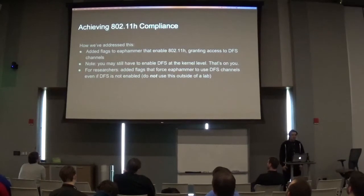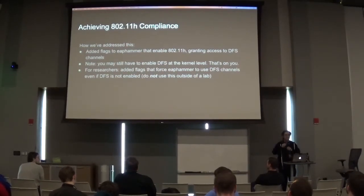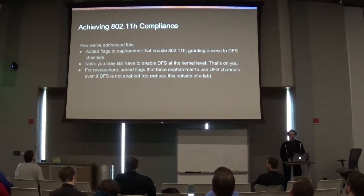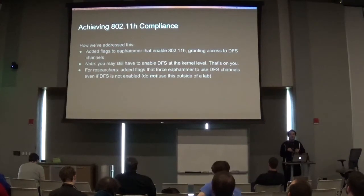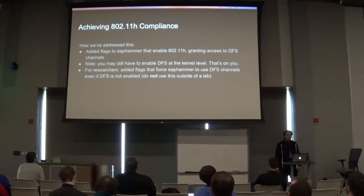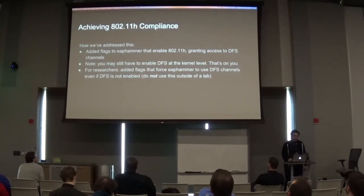We've added flags to ePammer — this tool — that enable 802.11h, which grants access to DFS channels. If you're using a standard version of Linux, you'll need to patch your kernel to enable DFS — that's on you, since we're not in the business of writing kernel patches. But if you have an OS patched to enable DFS with the relevant kernel modules, you can use ePammer to control them and enable access to DFS channels. There's also a flag — for research purposes and lab environments only, it's illegal to use outside a Faraday cage — that forces ePammer to use DFS channels without DFS enabled. Don't do that outside of a Faraday cage, but it's there in case you need it.